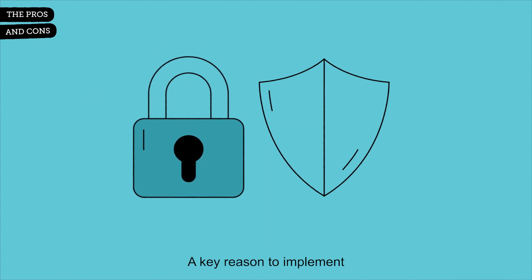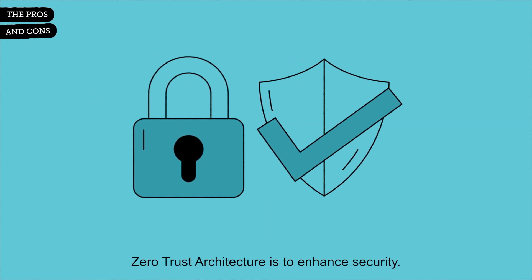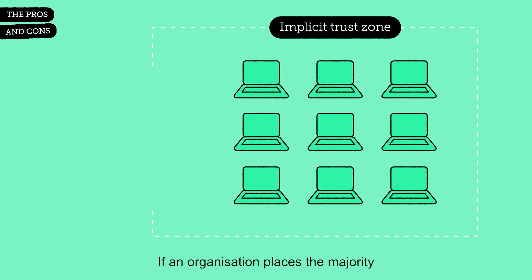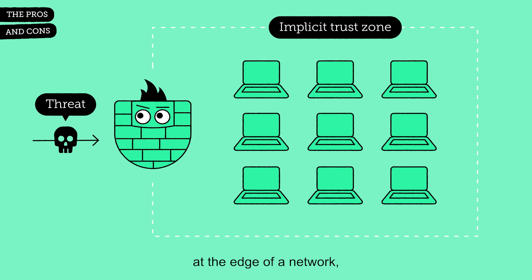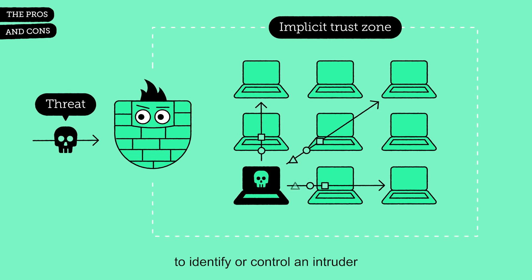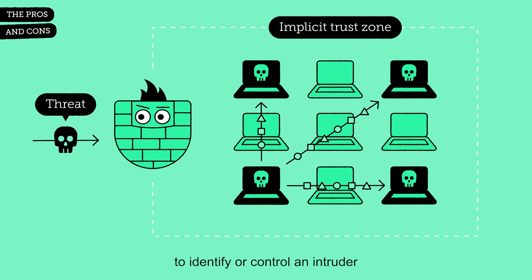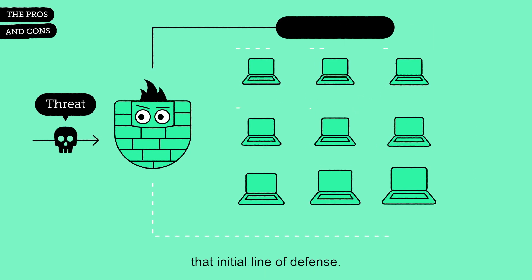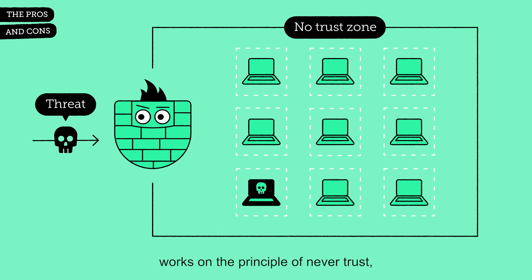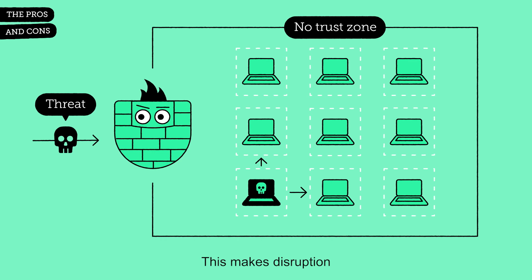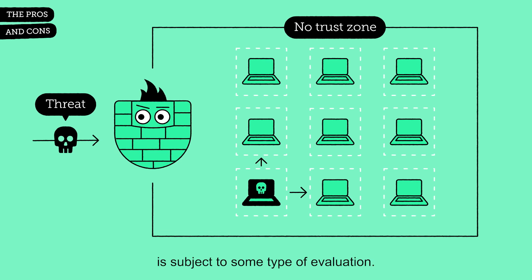A key reason to implement Zero Trust Architecture is to enhance security. If an organization places the majority of its security measures at the edge of a network, it will be extremely difficult to identify or control an intruder if they successfully breach that initial line of defense. But a Zero Trust model works on the principle of never trust, always verify. This makes disruption difficult for a malicious actor because every action a user or device takes is subject to some type of evaluation.